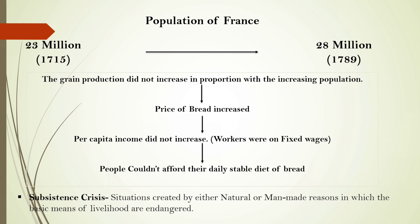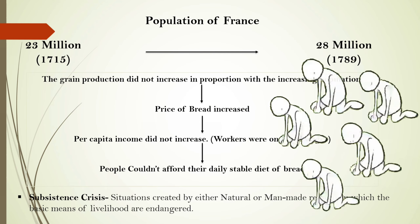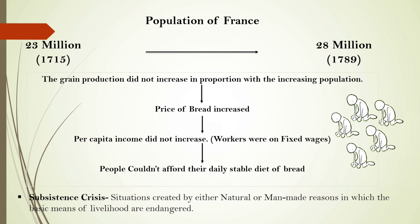Thus the price of bread rose rapidly, but laborers in the workshops were on fixed wages and could not keep pace with the inflation. During this period, conditions became even worse whenever drought or hail reduced the harvest.